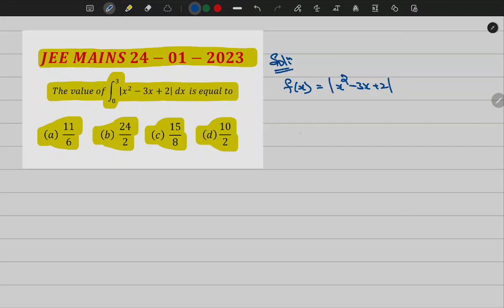If you observe here, this function is always positive. Let me write x square minus 3x plus 2 is always greater than or equal to 0. Now let me factorize, then it can be written as x minus 1 into x minus 2 is greater than or equal to 0.